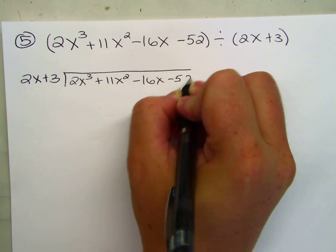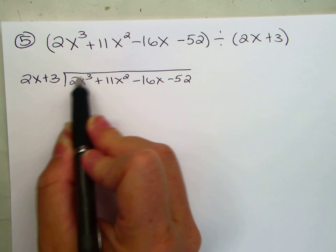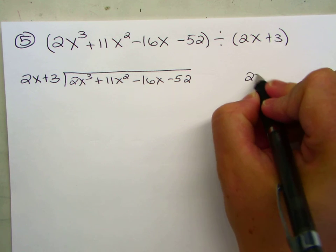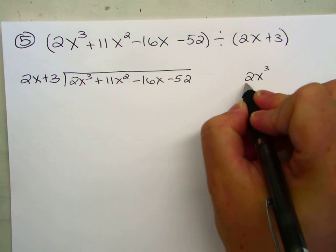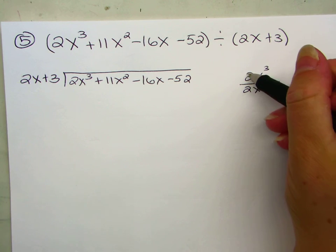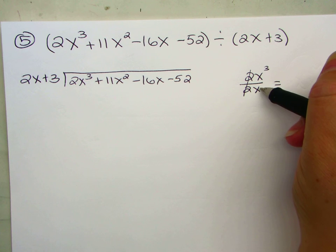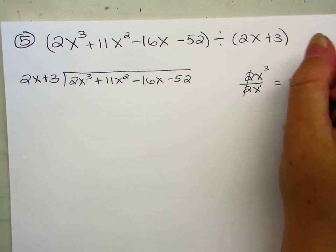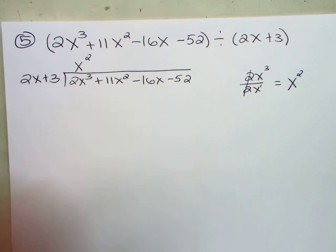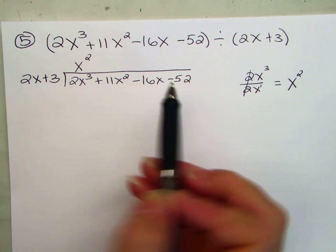All right, so same process, we take our highest term, divide by the highest term. 2x to the third divided by 2x. The 2's cancel, x cubed divided by x to the first is x squared. That's what we get when we divide, put that on top. Now what do we do?